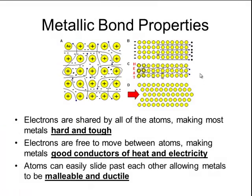A third property of metal bonds is that the atoms can easily slide past each other, allowing the metals to be malleable and ductile. Malleable means that the metal can be hammered or flattened into sheets, and ductile means that the metal can be drawn into long, thin wires.